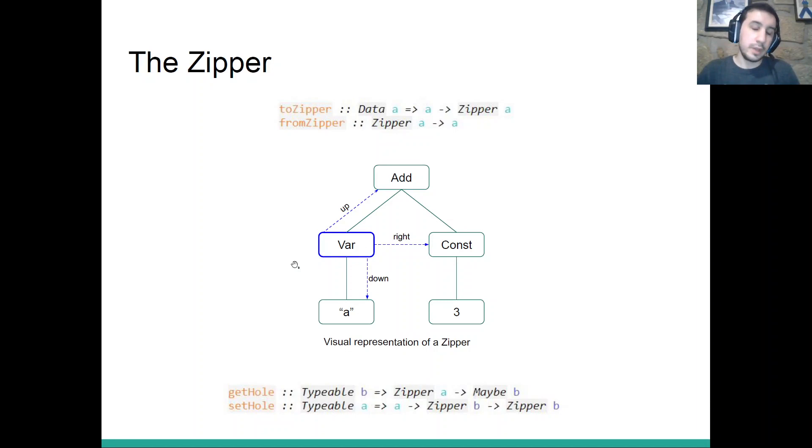We can assume that we are focused on a given node, in this case, the node var. And then we can change our focus to different nodes using traversal functions, such as up. In this case, we would go up into the add node. We could use right to go to the node to the right, in this case, const. Or we can use down to go deeper into the nesting, in this case, we will go into the A node.